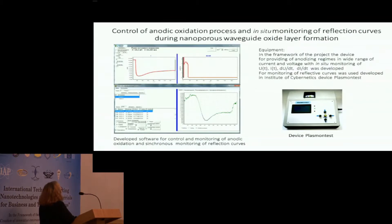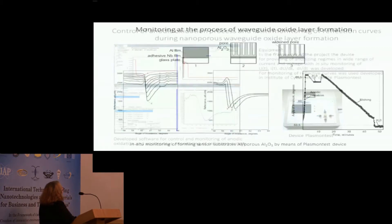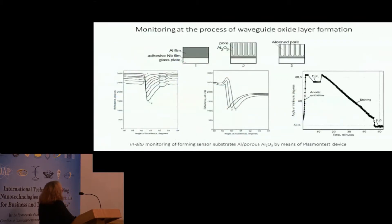This shows the monitoring of the process of substrate formation. When the reflectance curve has the good form we know, we can stop the process of oxidation or etching.